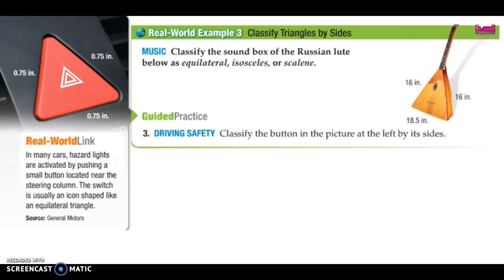Now, if I look at this example right here, we look at this Russian lute, and we see that we have one side being 16 inches, the other side being 16 inches. So those two are the same. And then 18.5-ish inches. The last one is not. So what we're left with is two sides the same, which means this is going to be an isosceles triangle.